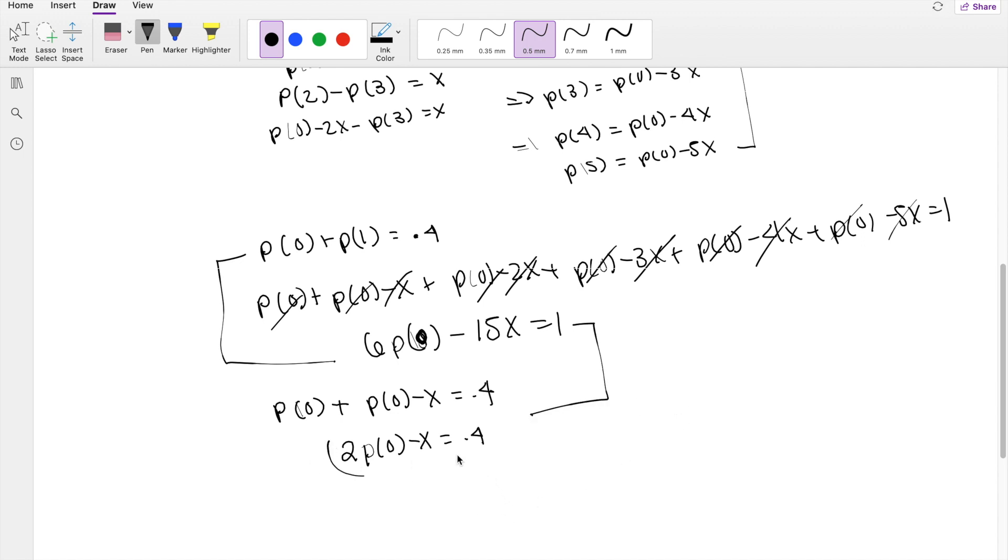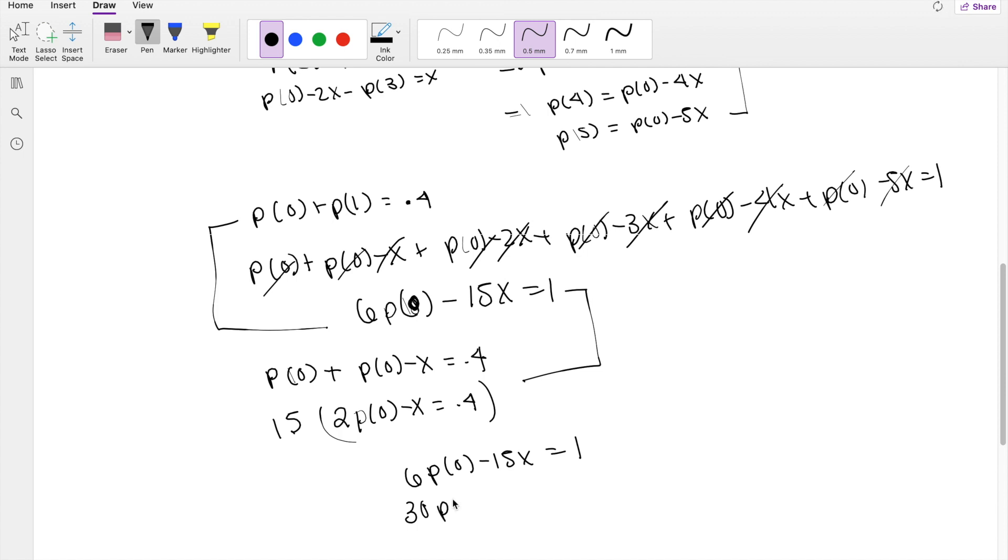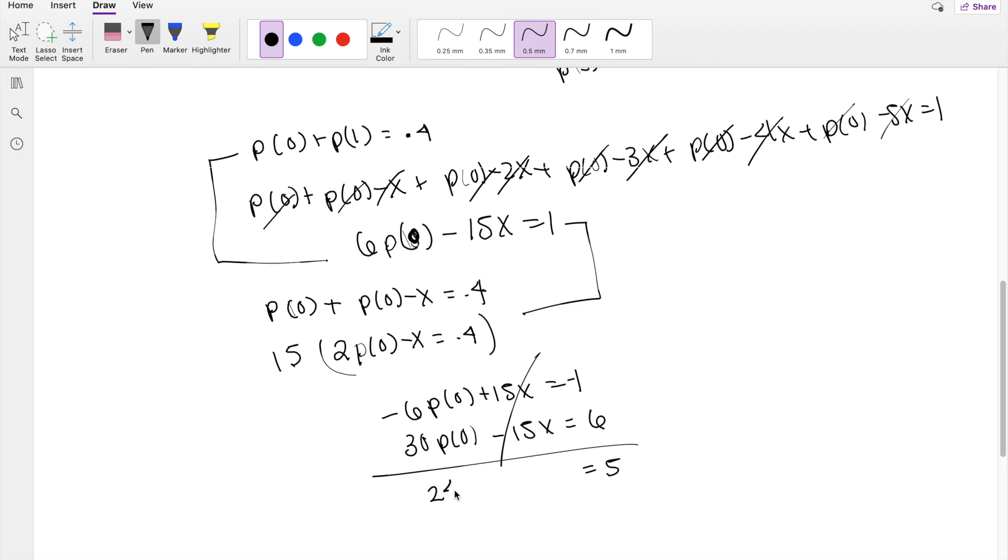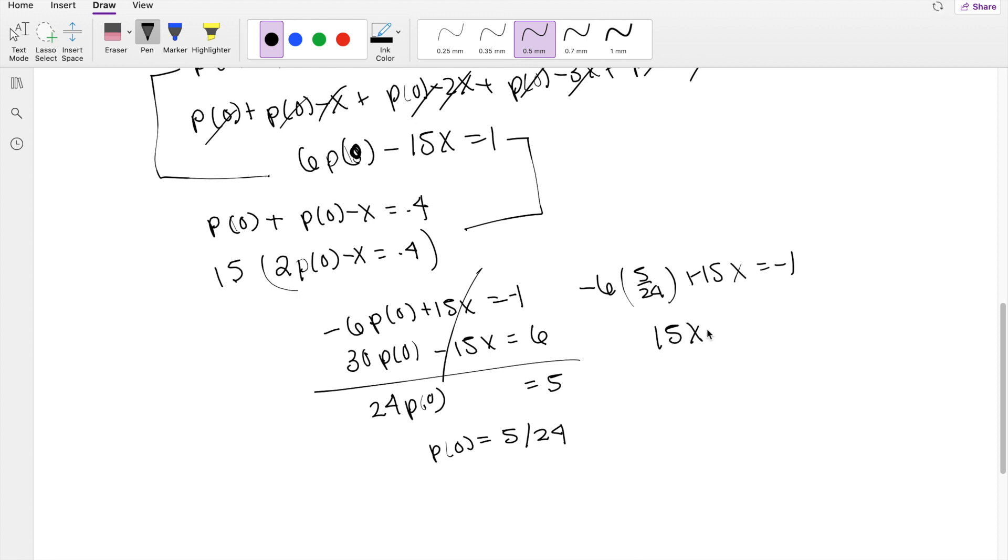I'm actually going to multiply this bottom one times 15 so it's a little easier. The top one stays the same, 6 times probability of 0 minus 15x is equal to 1. The bottom one becomes 30 times probability of 0 minus 15x is equal to 6. So subtracting this one here, I'm going to actually multiply this whole top row by a negative 1. So now this becomes, this just cancels out, and you get 5 is equal to 24 probability of 0. So then probability of 0 must be equal to 5 over 24. So then we can plug probability of 0 back in. Negative 6 times 5 over 24 plus 15x is equal to negative 1. You get 15x is equal to negative 1 plus 30 over 24. So this is equal to 1 over 4 times 15, which is equal to 1 over 60 is equal to x.